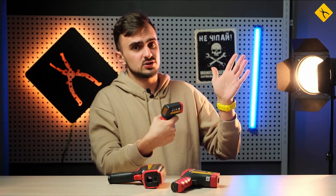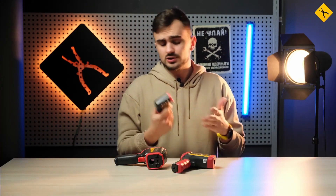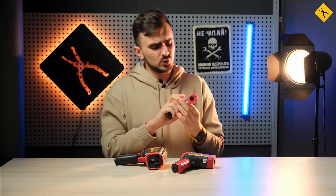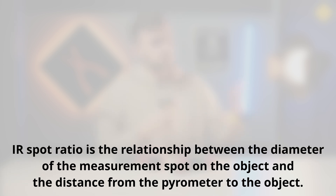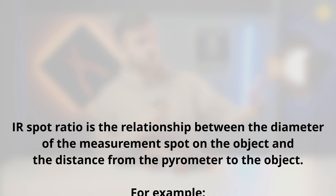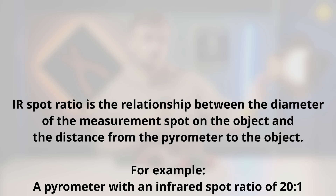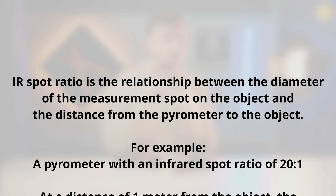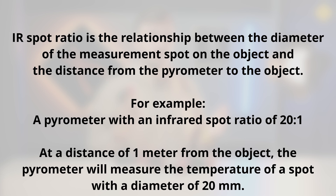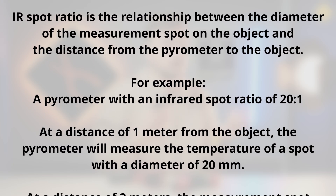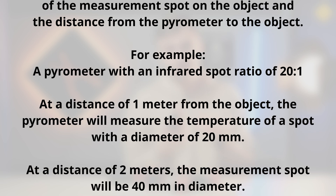The pyrometer is infrared. And, by the way, the laser in it is just a pointer — it doesn't measure anything. And here we move on to the question of what infrared expansion is. By the way, it's indicated on every pyrometer. IR spot ratio is the relationship between the diameter of the measurement spot on the object and the distance from the pyrometer to the object. For example, a pyrometer with an infrared spot ratio of 20 to 1: at a distance of 1 meter from the object, the pyrometer will measure the temperature of a spot with a diameter of 20 millimeters.